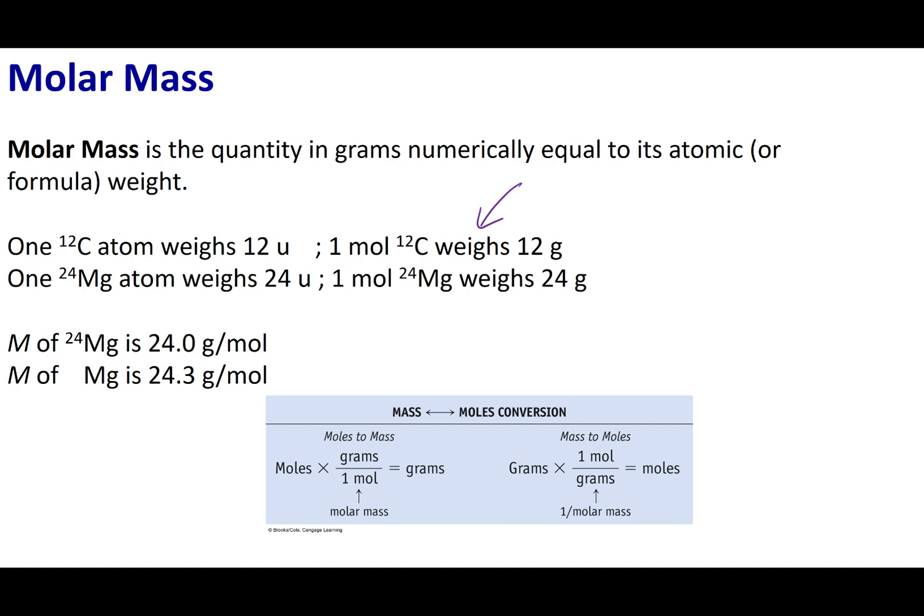If I take one mole of carbon-12, it's going to weigh about 12 grams. You guys can remember how we defined the atomic mass unit. We said that carbon-12 equals 12 AMU, or 12 atomic mass units. I can play the same game with magnesium-24. Magnesium-24 weighs about 24 atomic mass units. And if I were to take one mole of magnesium-24, it would weigh 24 grams.